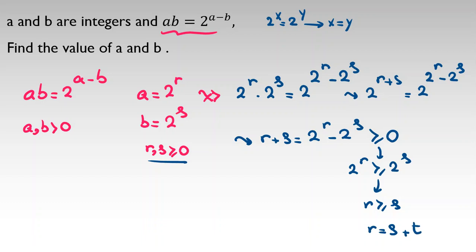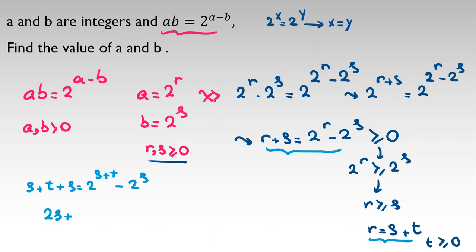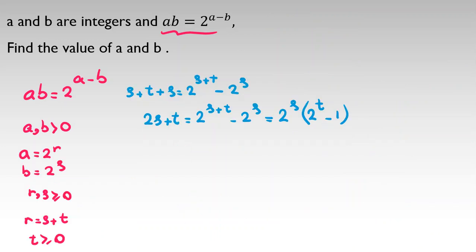Let R equal S plus T, where T is at least 0. Substituting into our equation: S plus T plus S equals 2 to the S plus T minus 2 to the S. The right side factors as 2 to the S times the quantity 2 to the T minus 1, giving us 2S plus T equals 2 to the S times the quantity 2 to the T minus 1.